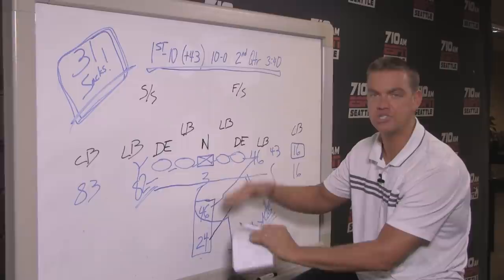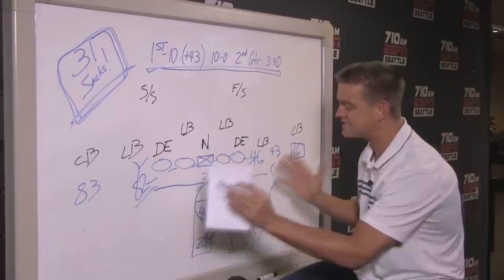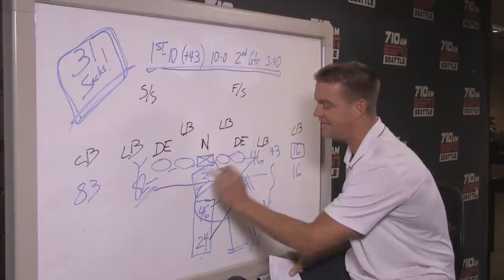This is just that margin for error in their pass protection is greatly increased with this kind of action, this kind of set, the space that you give Russell. Players, formations, plays. The space you give him to operate in the pocket, away from everybody else.